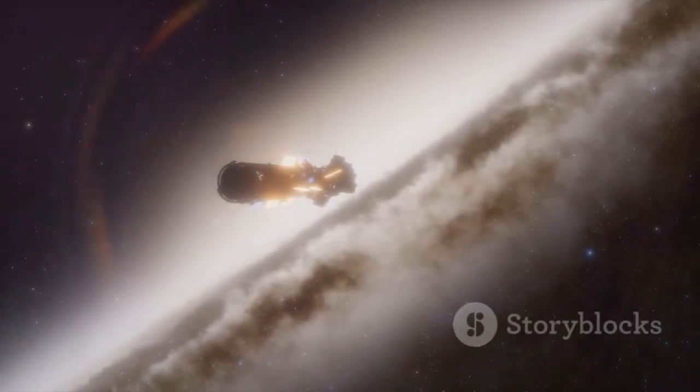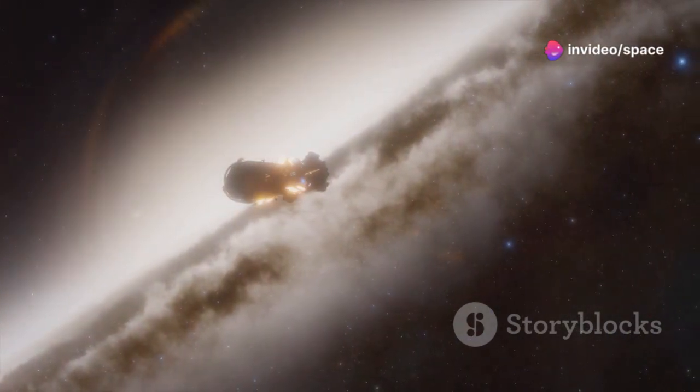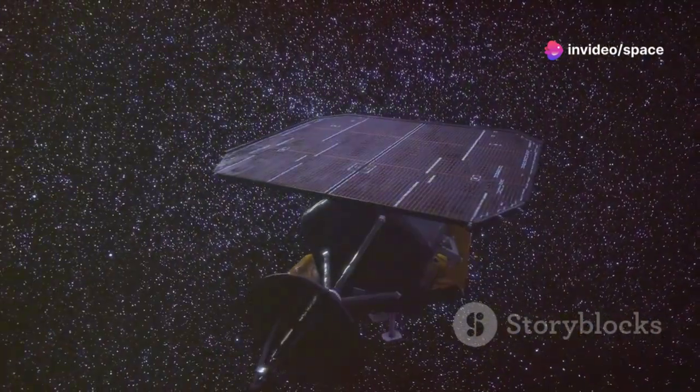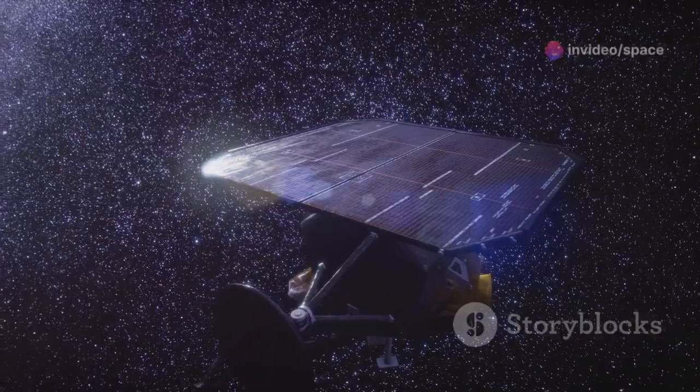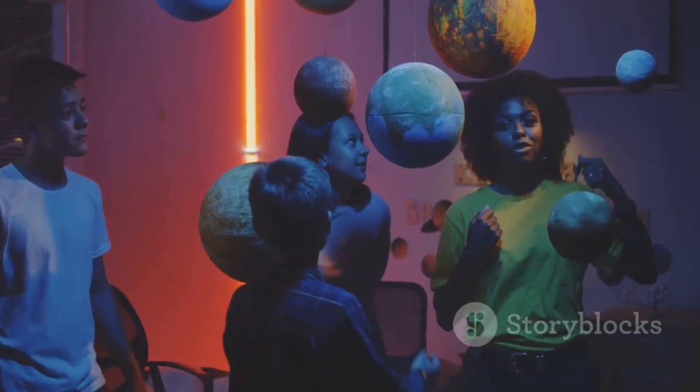Voyager 1 was outfitted with a range of advanced instruments, including cameras, spectrometers and magnetometers. These tools enabled scientists to study the planet's atmospheres, magnetic fields and rings. The mission also aimed to uncover more about the moons of these giant planets.